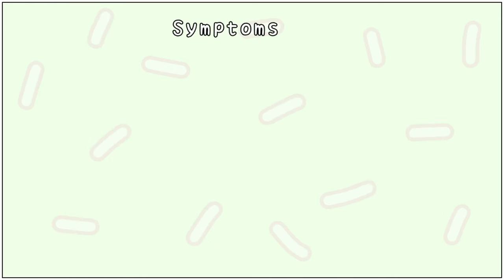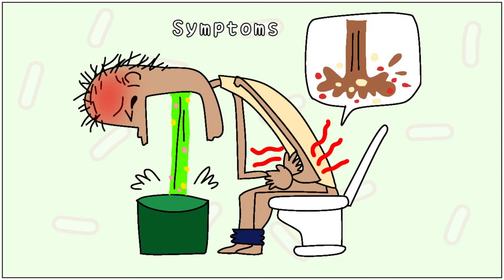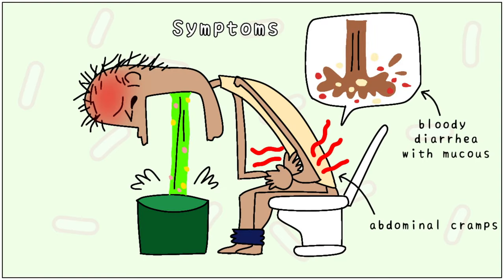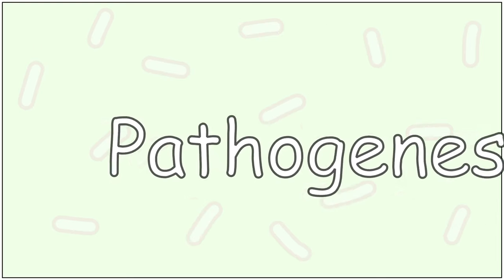Infection by Shigella causes bloody diarrhoea with mucus, abdominal cramps, fever, accompanied by nausea and vomiting.